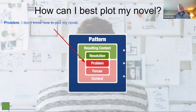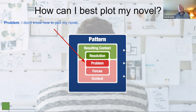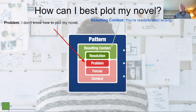We're going to go through one more example, and this one we're going to highlight how the different contexts and forces play into developing different solutions. The problem is: I don't really know how to plot my novel. You're getting ready maybe for NaNoWriMo and you're not sure how to plot your novel. The resulting context we want at the end is that you're ready to start writing — that's where you want to get to. You need to do some plotting before you get going.